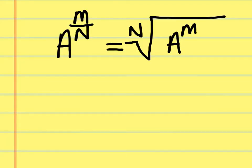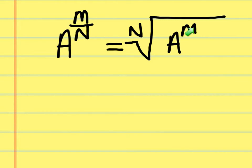Rule 6: fractional exponents. This may look confusing at first, but it's straightforward once you practice. If you have a to the m over n power, you can rewrite this as a radical: the nth root of a to the m power. The bottom number of the fraction tells you which root to take, and the top number is the power applied to the base inside the radical.